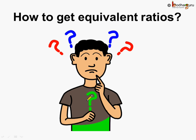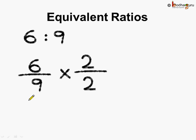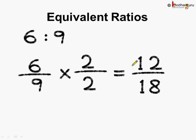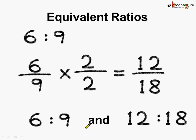Now you might think, how do we get equivalent ratios? Well, if we have 6 is to 9, to get an equivalent ratio, we can multiply both the numerator and the denominator of the ratio by the same number and we get an equivalent ratio. Like here, we multiplied both the numerator and the denominator by 2, and what do we get? 6 twos are 12 and 9 twos are 18. We got 12 by 18. So 6 is to 9 and 12 is to 18 are equivalent ratios.